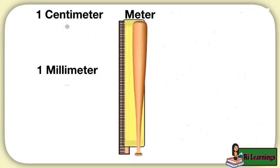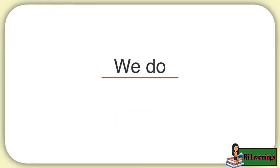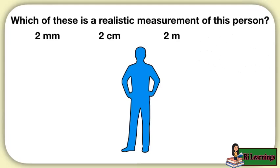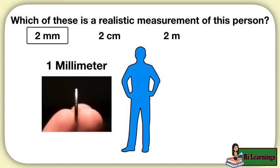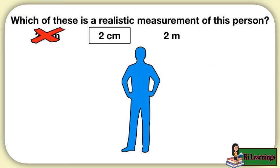And so now we have three measurements. Millimeters are the smallest, then we have centimeters and meters. Let's practice some of this together. Here we are asked which of these is a realistic measurement of this person? Two millimeters, two centimeters, two meters. Let's start by looking at two millimeters. Well, we just learned that one millimeter is about the thickness of a coin. So does two millimeters seem like the right size for a full person? No, two millimeters is way too small.